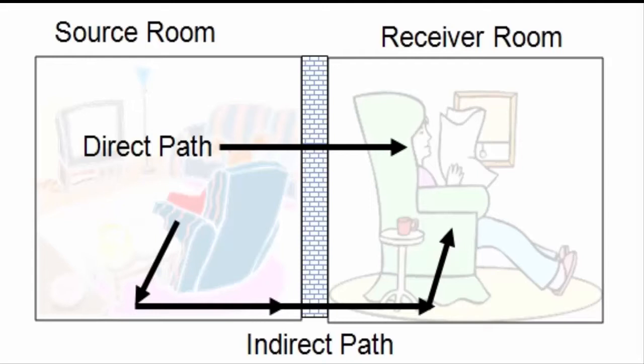On screen at the moment I have a diagram showing both a source room and a receiver room. In all cases in terms of sound insulation, there's always a direct path and an indirect path — sometimes they call the indirect path a flanking path. That relates to sound that travels around the partition, while direct paths relate to sound that travels through the partition.